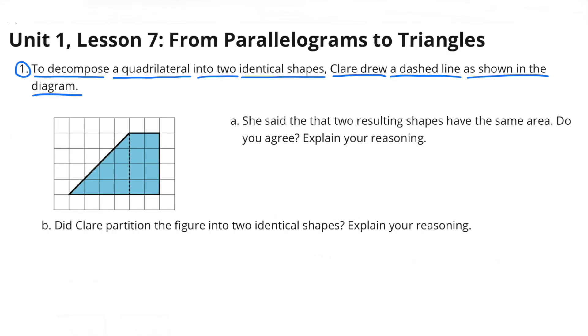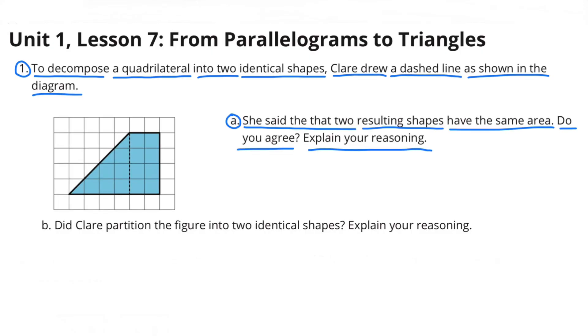Number 1. To decompose a quadrilateral into two identical shapes, Claire drew a dashed line as shown in the diagram. She said that the two resulting shapes have the same area. Do you agree? Explain your reasoning.